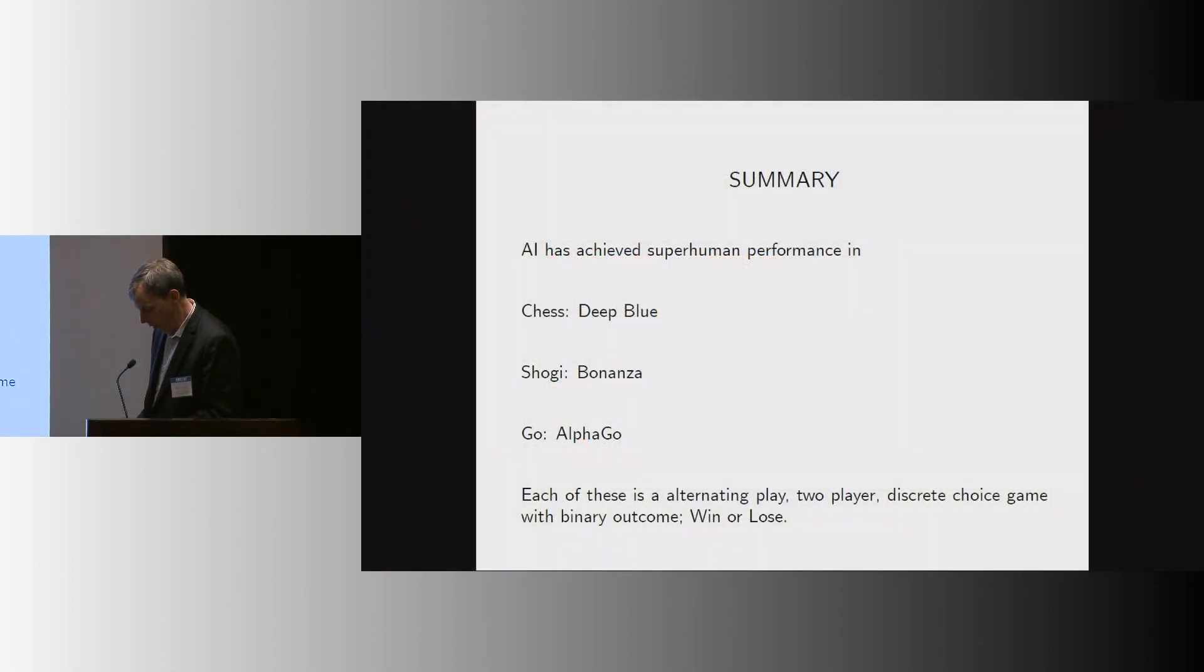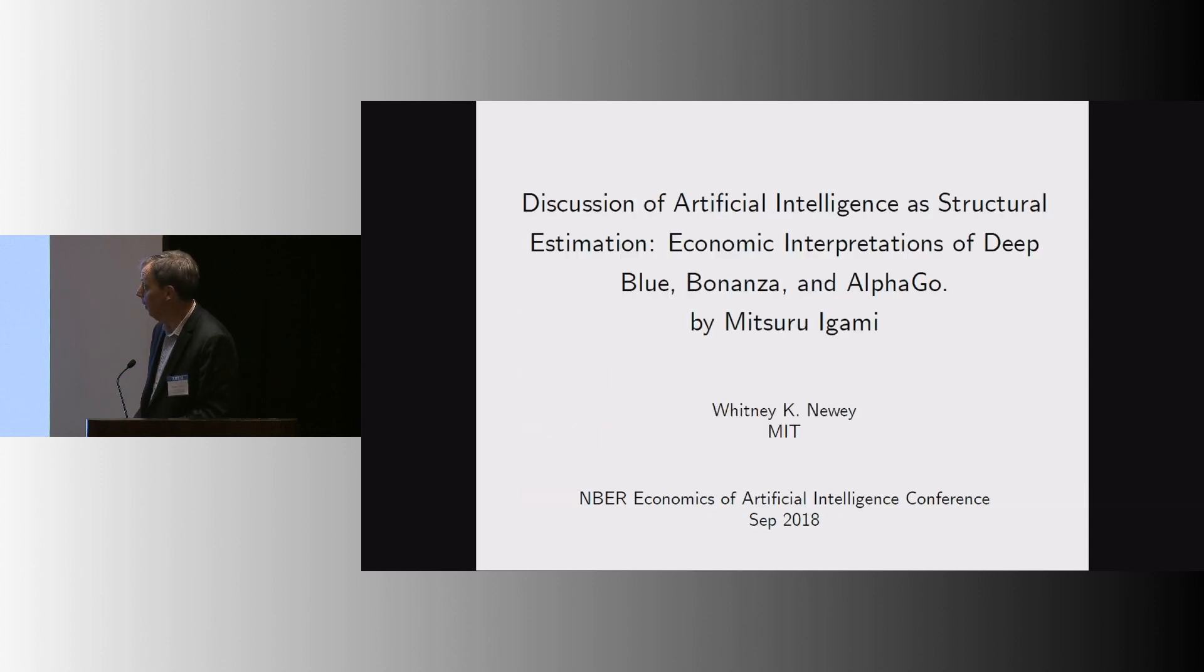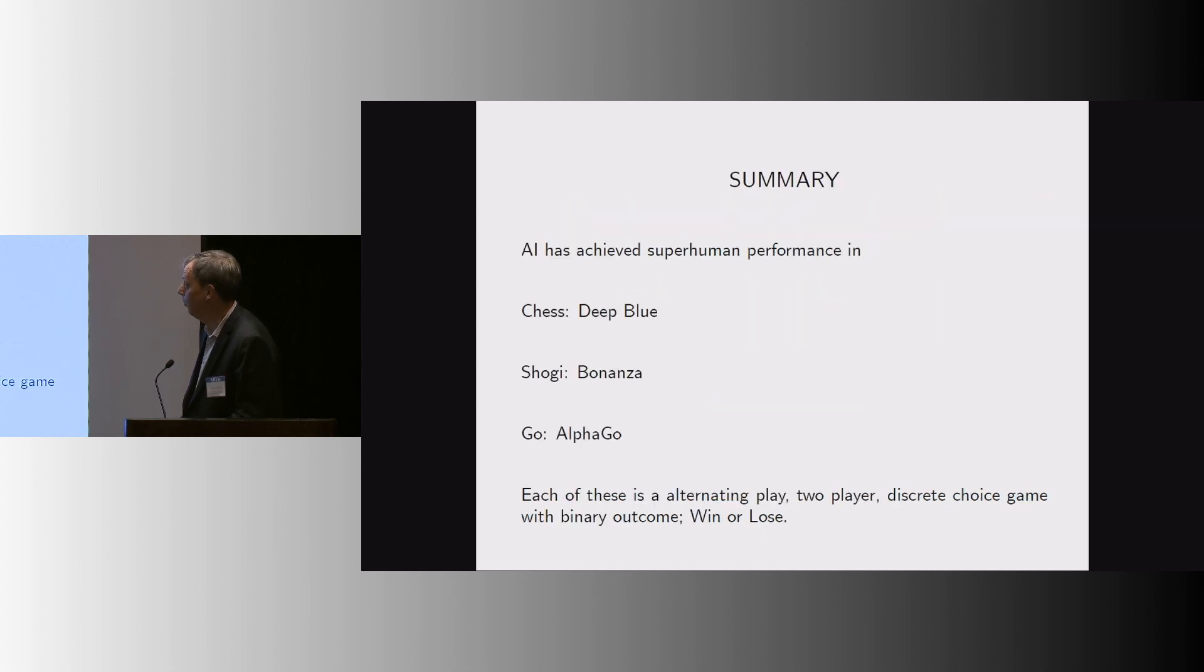All right. So, happy to be here to talk about this paper and enjoy the interesting conference. I want to just briefly summarize what Shuri talked about. So, as he talked about, these methods have achieved a really good performance for these three games, which is very impressive. And each of those is an alternating player, two-player discrete-choice game with a binary outcome, win or lose.